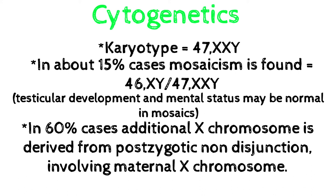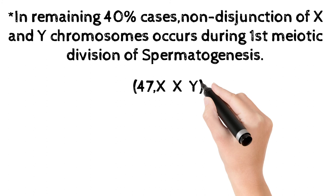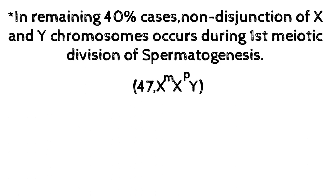In 60% of cases, it involves the maternal X chromosome, giving the following karyotype. In 40% of cases, non-disjunction of the X and Y chromosome occurs during the first meiotic division of spermatogenesis, giving the following karyotype.